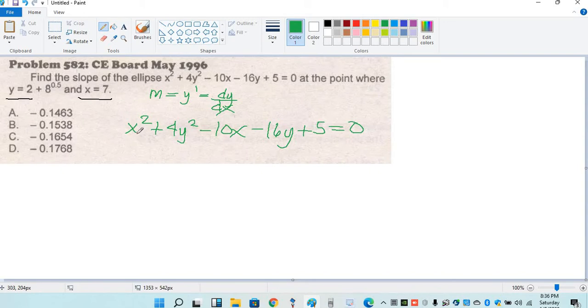So derivative of x squared is 2x plus, derivative of 4y squared is 8yy prime, minus 10 minus 16y prime equal to 0.